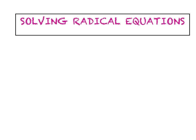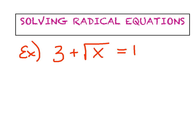Welcome back to the flipped classroom. Our goal today is to solve radical equations. So what is a radical equation? Well, just like the name sounds, it's an equation that has a radical in it. For example, 3 plus the square root of x equals 10. Clearly, we have an equation, we have an equal sign, and we have a radical that has a variable under it. So we have what we're going to call a radical equation.